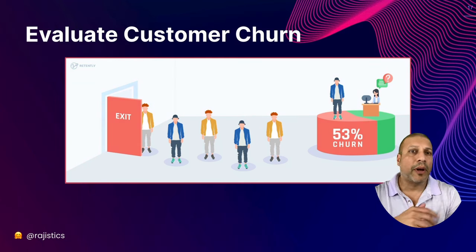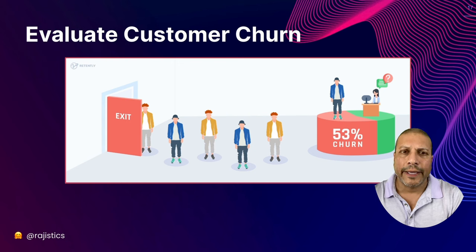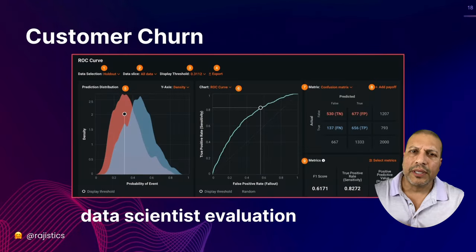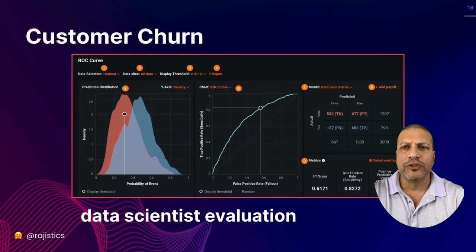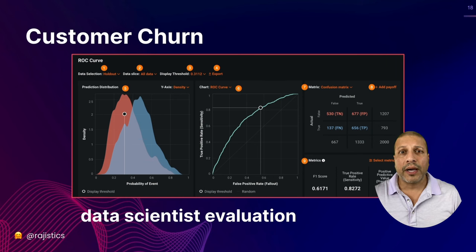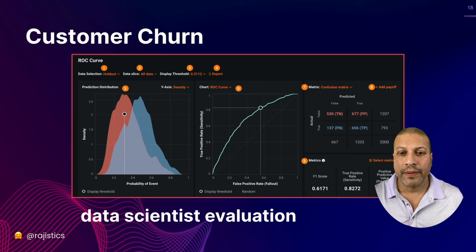Let's start with a simple churn problem — a classic 101 data science problem. Imagine there's a baseline churn model and your boss asks you to build a model to improve it. How would you think about evaluation? As a data scientist, you might build something and calculate a confusion matrix with AUC, precision, and recall, and bring that to your boss to show you've built a better model.